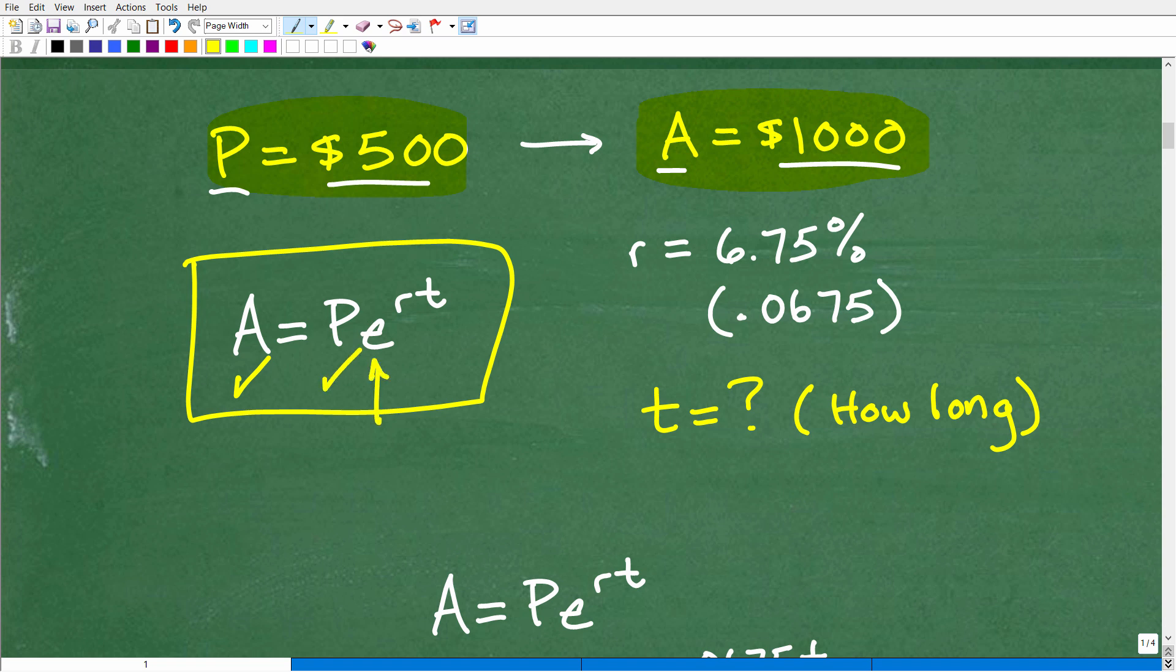Okay, so again, we're talking about this formula right here. I have this and I have this. E is already a number itself. I do have the rate R, okay, so the rate that's going to be compounded continuously is 6.75%. But I need to express this as a decimal. So just move that decimal point two places to the left or divide by 100. There you go, 0.0675.